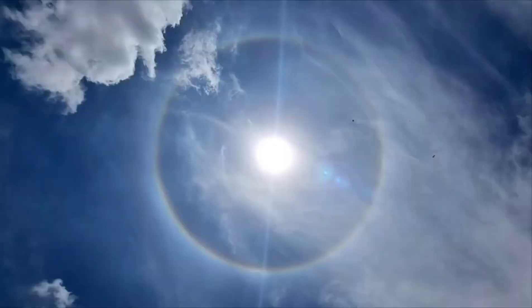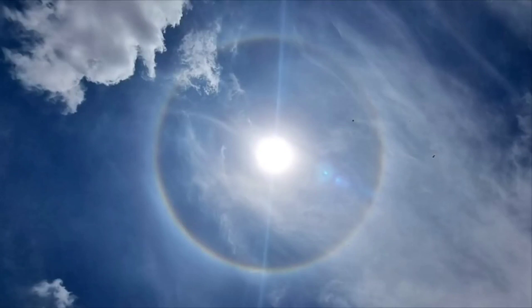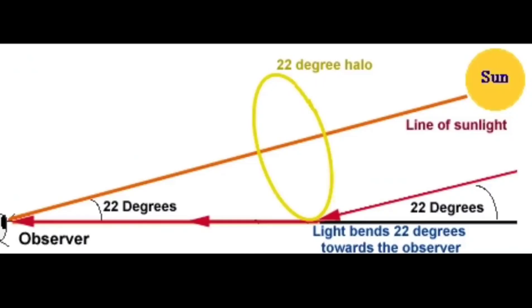We all see this and everyone takes pictures and puts status asking what that big circle around the sun is. People started discussing and calling it a big mystery — but there is no mystery. It is called a 22-degree circular halo, and it's a strange optical solar spectacle. It happens when sun rays or moon rays fall on hexagonal ice crystals present in cirrus clouds, causing reflection and refraction, which is how the circle forms.